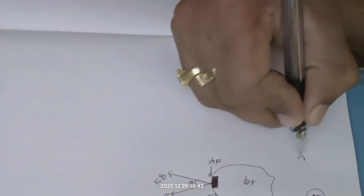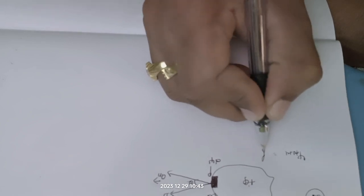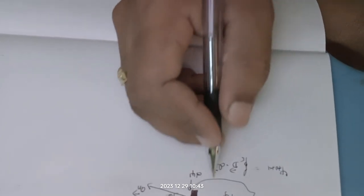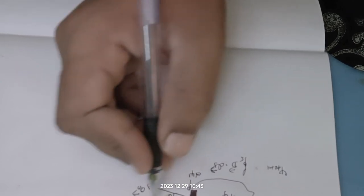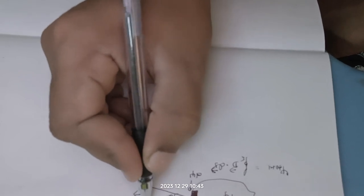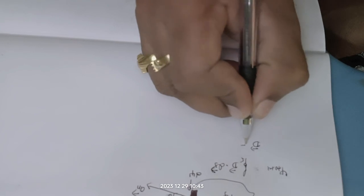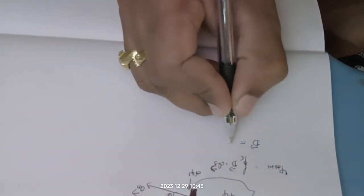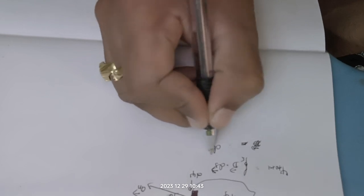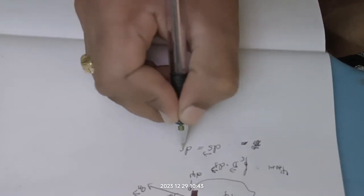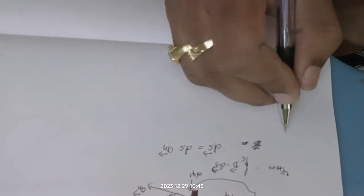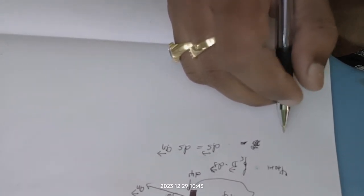In step one, we will prove that psi-total equals the closed surface integral of D dot dS. First, the differential surface vector dS can be written as a scalar dS multiplied by the unit normal vector a_n. So the vector dS equals dS times a_n.